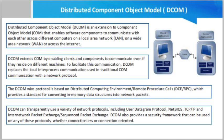DCOM extends COM by enabling clients and components to communicate even if they reside on different machines. To facilitate this communication, DCOM replaces the local inter-process communication used in traditional COM communication with a network protocol. In effect, DCOM provides a longer wire than COM, yet the client and the component are not aware of this difference.